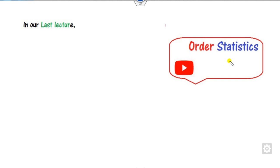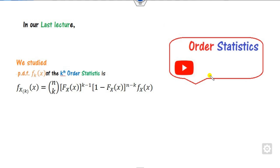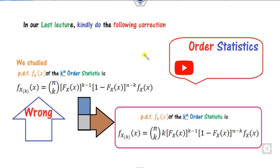The last lecture was on order statistics, which is available at my channel, but there is one correction. In the last lecture we studied the PDF of the k-th order statistic, but there is a slight error — k is missing. So kindly correct this when you watch the order statistics lecture at my YouTube channel.